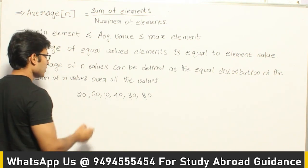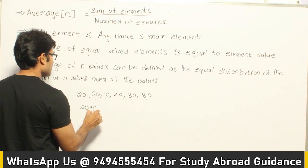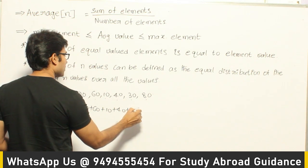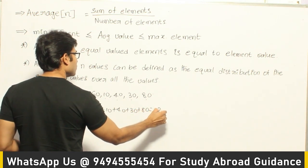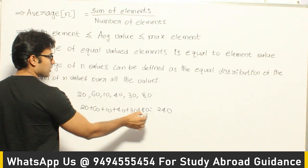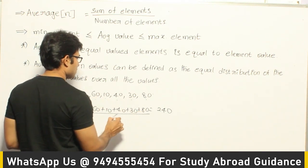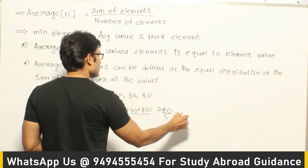Add them all up and divide by number. So 20 plus 60 plus 10 plus 40 plus 30 plus 80, it is going to be 240. Now average is nothing but divide them with the number of elements. So how many? 1, 2, 3, 4, 5, 6. So 6, it is going to be 40.